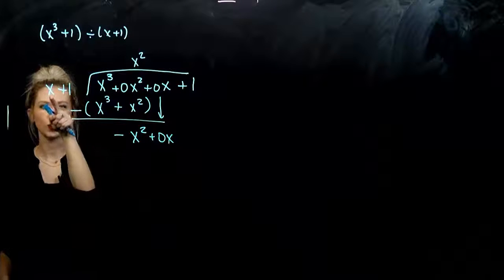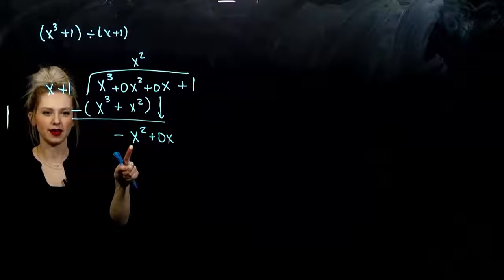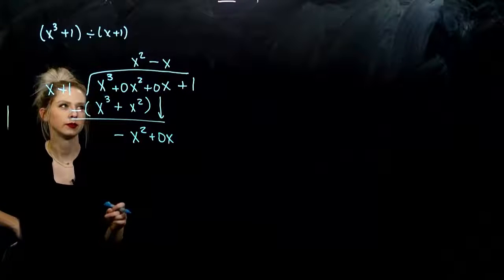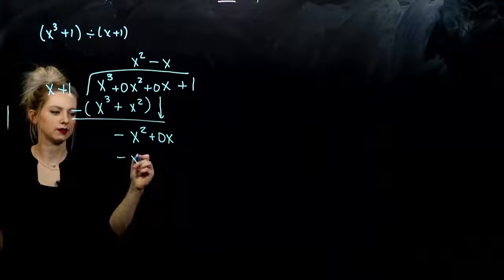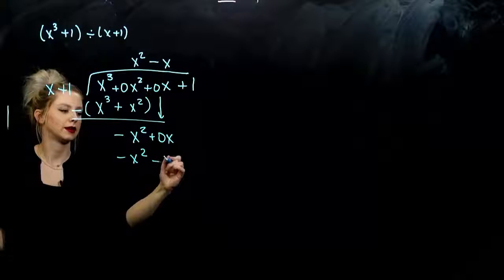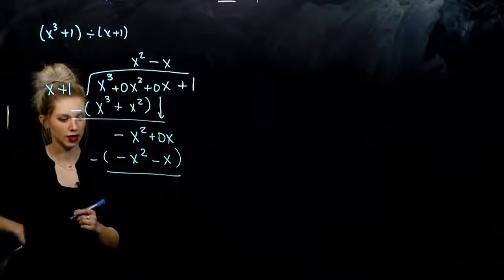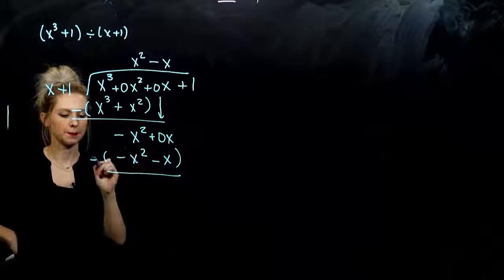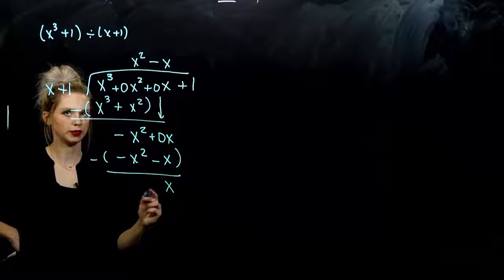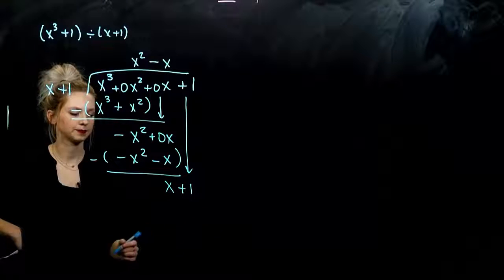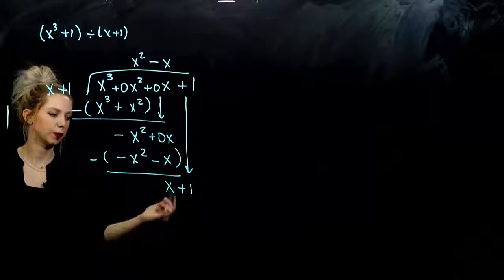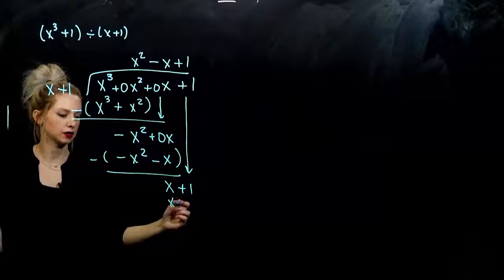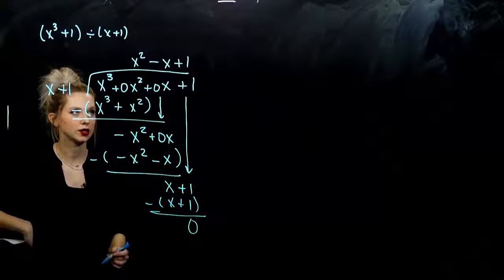The question to ask: what do I need to multiply x by to get me to negative x squared? So negative x. Again, everything lines up in a column. Take that times x: negative x squared. Negative x times one: negative x. We are looking at subtracting the entire quantity. So negative x squared plus x squared is going to be gone. Zero x minus a negative x is going to be left with one. And we bring down what's left. What do I need to multiply x by to get me x? One. So we take that times each, we get x plus one down below. As we look at the difference, we have a remainder of zero.